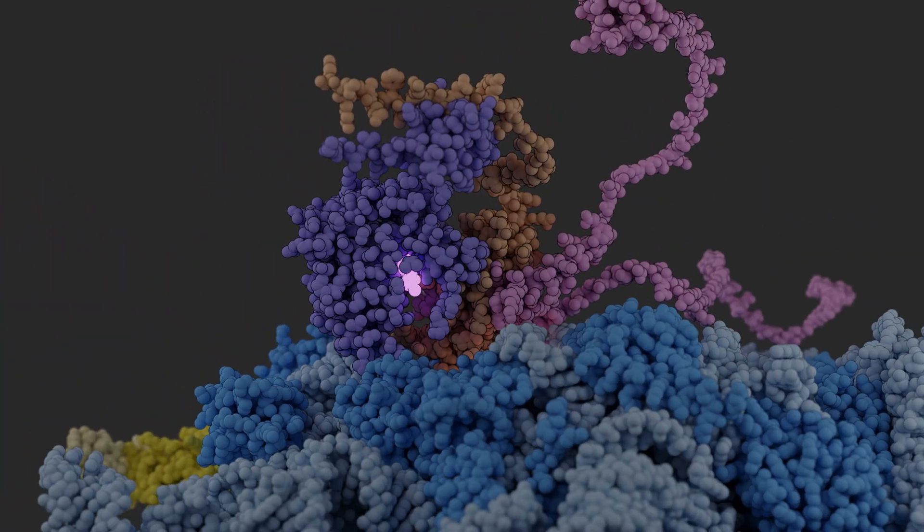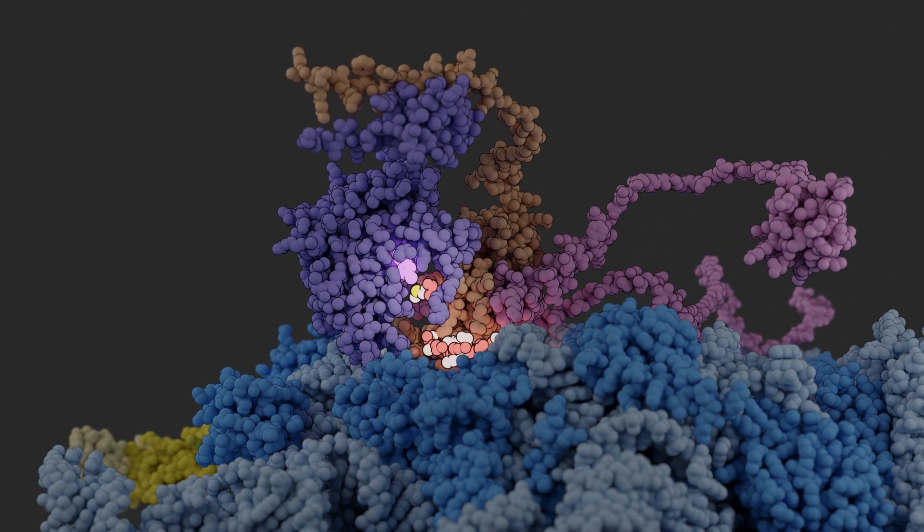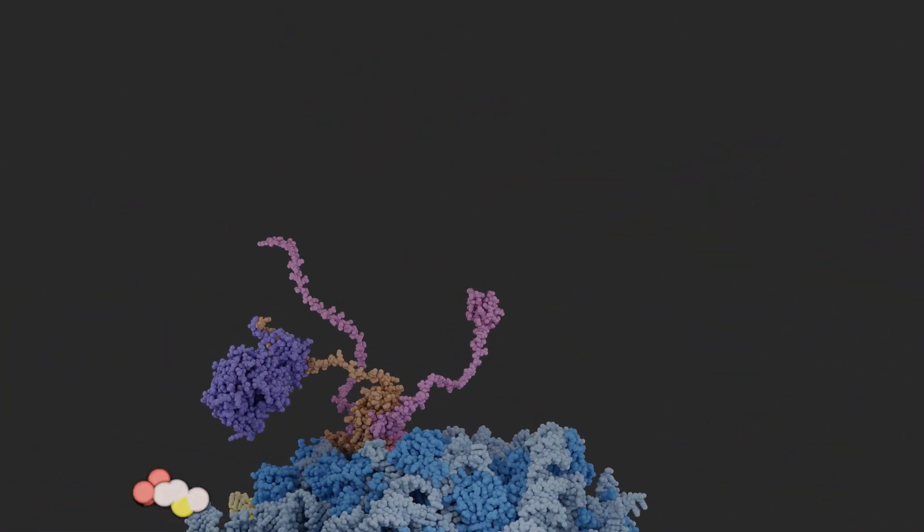An important enzyme that is recruited with the help of NAC is N-terminal methionine aminopeptidase, Met-AP, which removes the first amino acid from most cytosolic nascent chains.